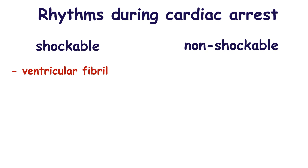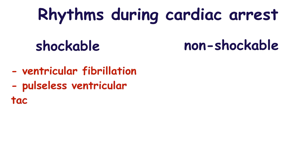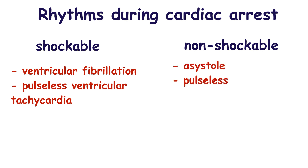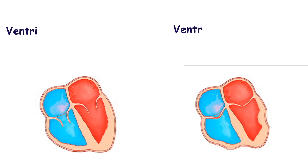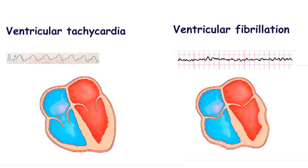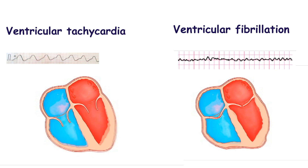Shockable rhythms include ventricular fibrillation and pulseless ventricular tachycardia. Non-shockable rhythms include asystole and pulseless electrical activity. In the case of shockable rhythms, there is an uncoordinated contraction of cardiac muscle cells, which leads to the absence of an effective ventricular contraction. Thus, the blood is not ejected from the ventricle, leading to the stop of the blood flow.